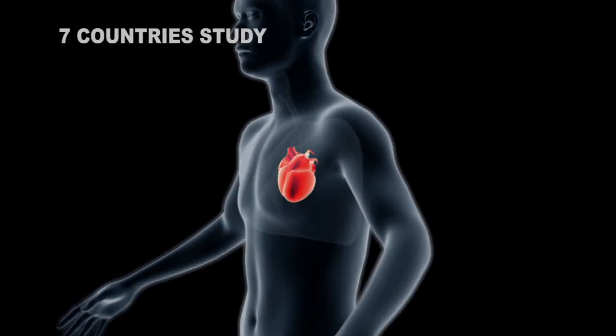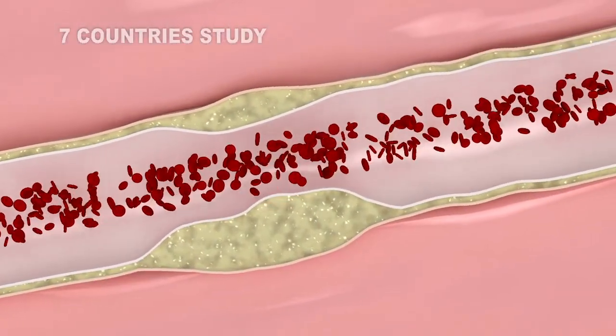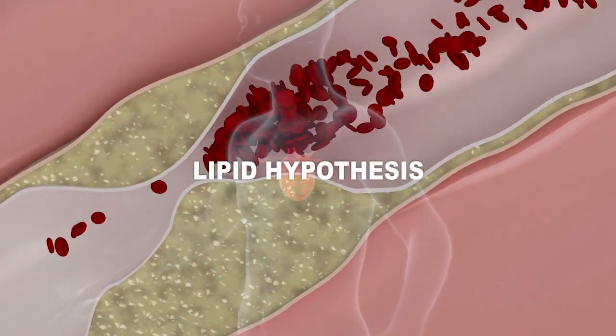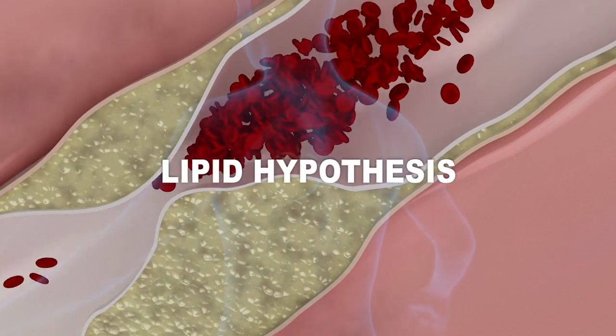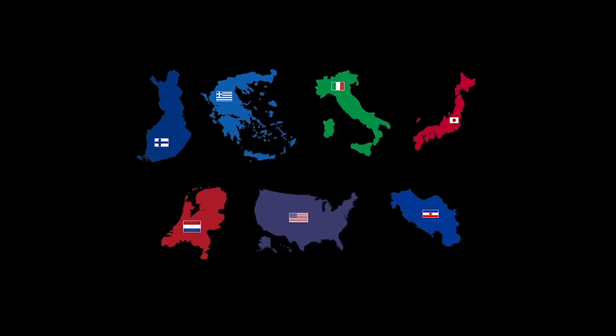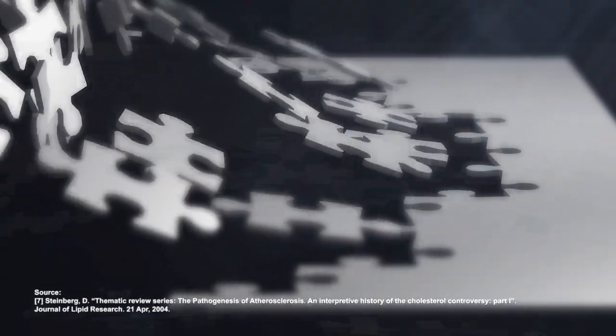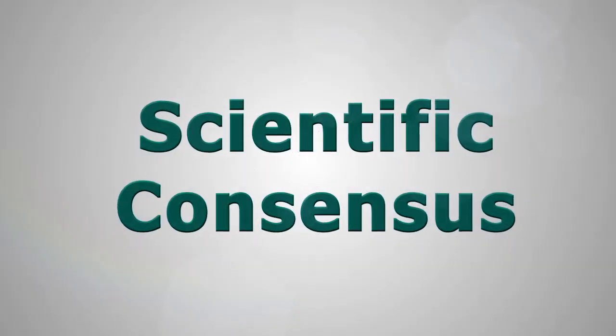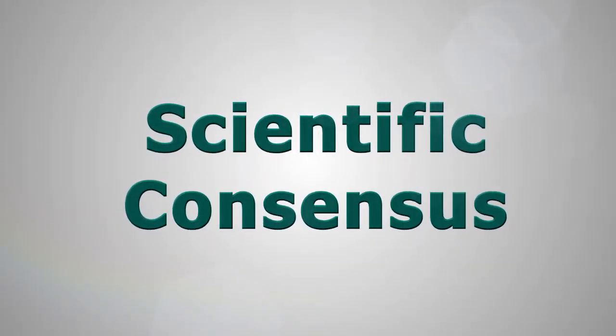In the late 1950s, American epidemiologist Ancel Keys published the first paper of the now famous Seven Countries Study, which was the first major study to identify high serum cholesterol as a major risk factor for coronary heart disease. This eventually became known as the Lipid Hypothesis, for which a consensus formed in support by the mid-1970s after more and more lines of evidence verified the findings of this initial study. There still exists some controversy within the medical field, but the scientific consensus very much remains strong today.